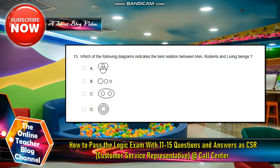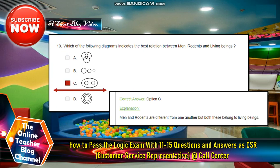Which of the following diagrams indicates the best relation between men, rodents, and living beings? A, B, C, or D? So the answer is letter C. And the explanation is men and rodents are different from one another, but both these belong to living beings.